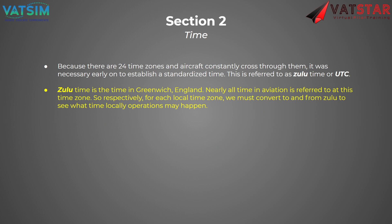Because there are 24 time zones and aircraft are constantly crossing through them, it was necessary early on to establish a standardized time that everybody uses as a reference. This is referred to as Zulu time, or Universal Time Coordinated, or UTC. Zulu time is the time in Greenwich, England, and nearly all time in aviation is referred to in this time zone. For each time zone, we have to convert to and from Zulu time to see what time it's going to be locally, as operations typically happen on local time.